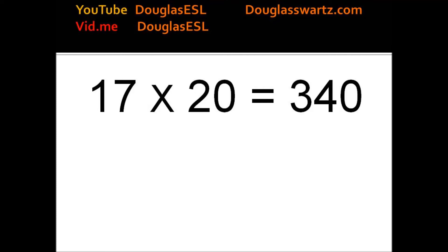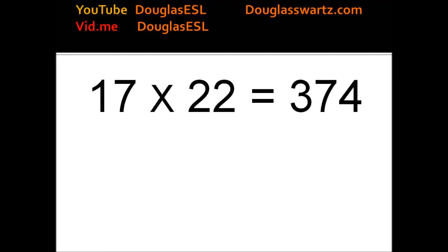17 times 20 equals 340. 17 times 21 equals 357. 17 times 22 equals 374. 17 times 23 equals 391.